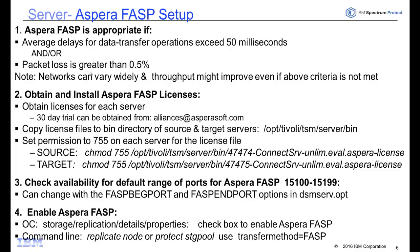Networks can vary widely, so even if these two criteria are not being met, it's possible you'll still benefit from Aspera FASP. You do not have to install any additional code beyond what comes as part of the Spectrum Protect server, but you will need to obtain and install an Aspera FASP license — one for each Spectrum Protect server, so one for the primary and one for the target server.